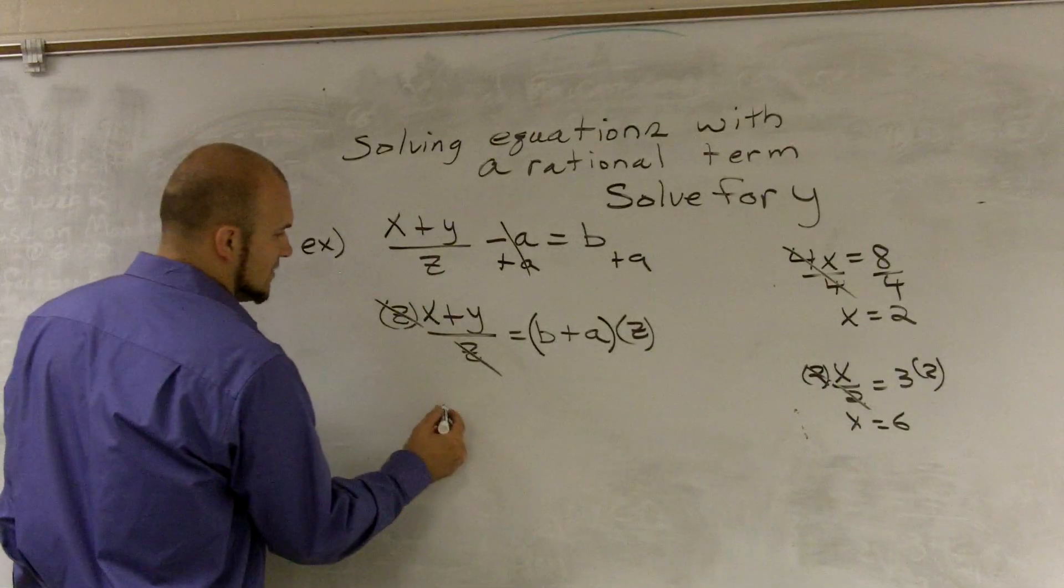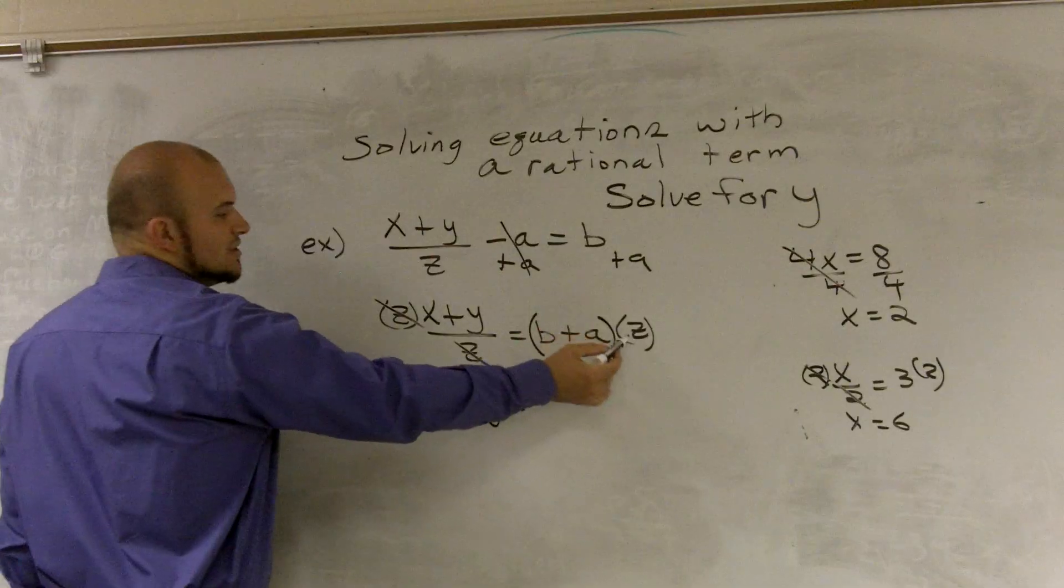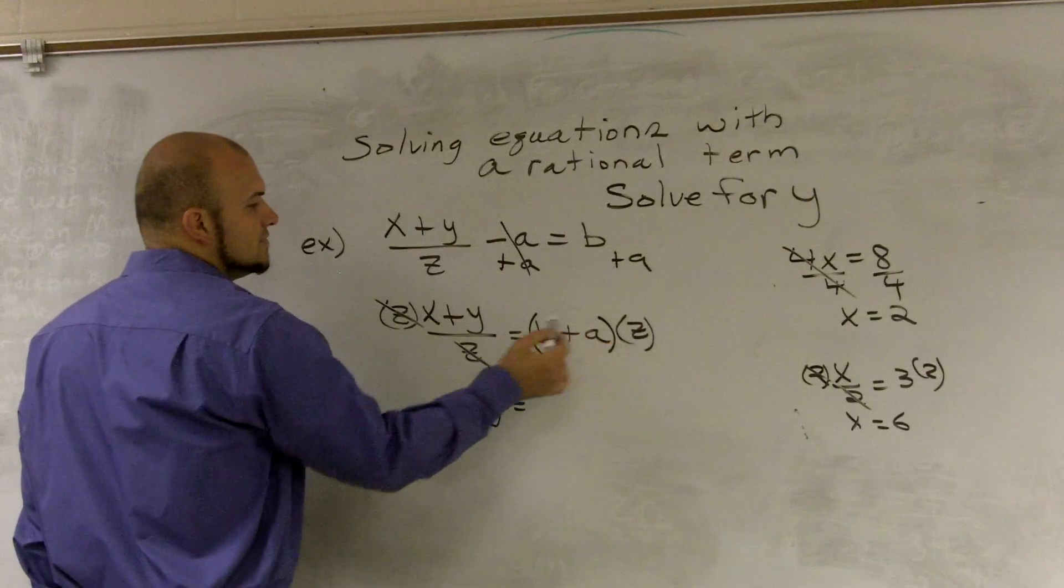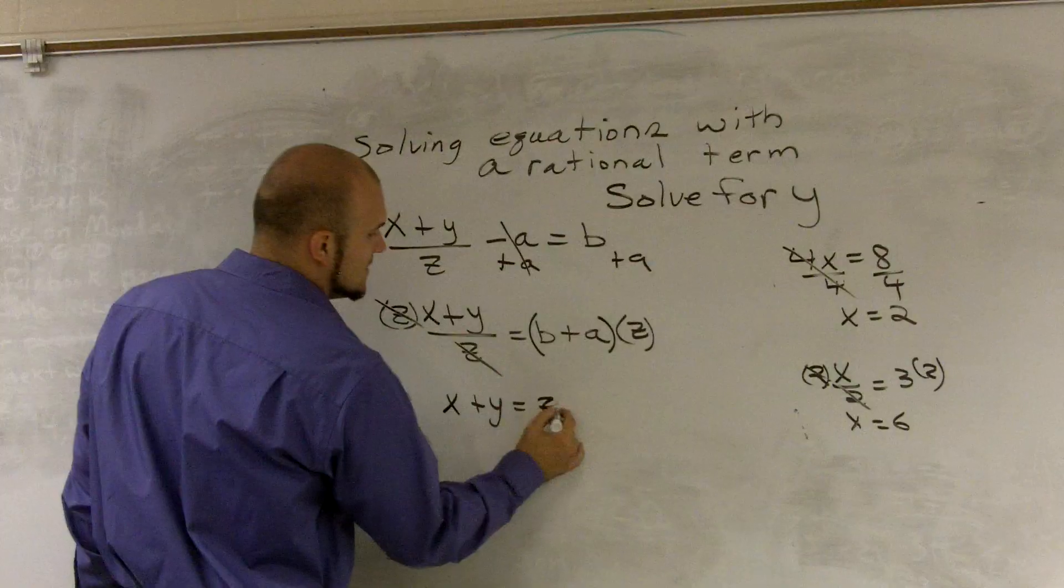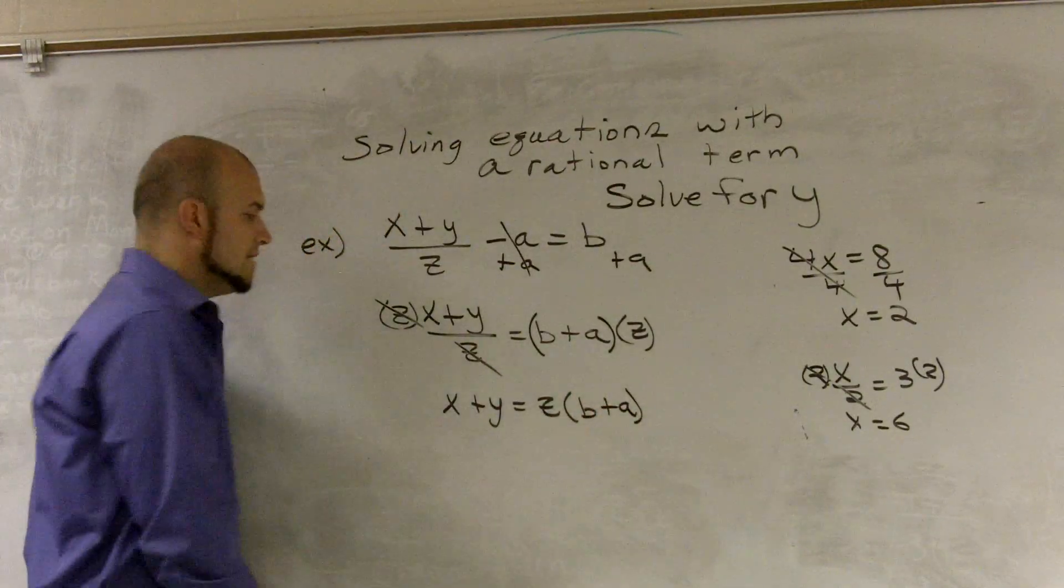So therefore, that cancels out. Now we're left with x plus y. And we usually like to represent this with a single term in front of the other two terms. So I'm going to write z over b plus a.